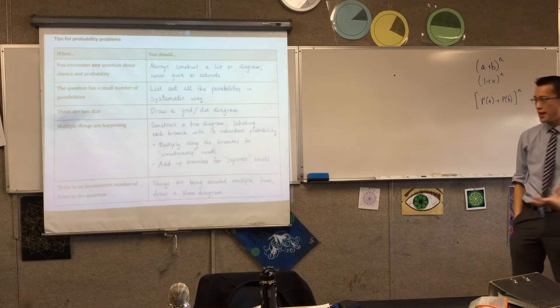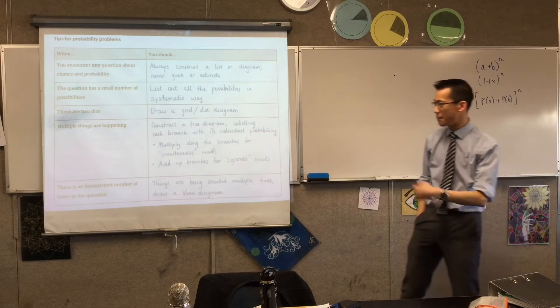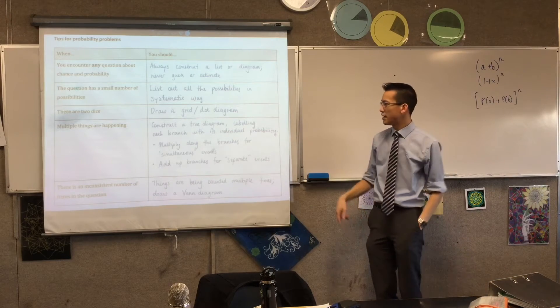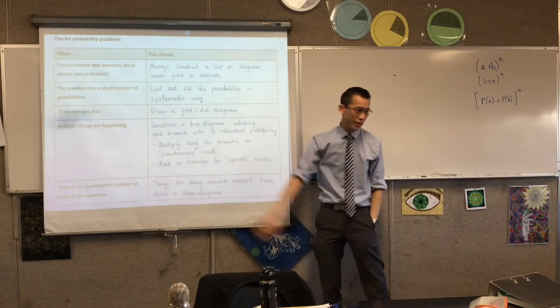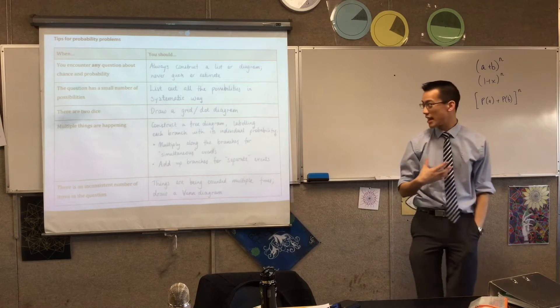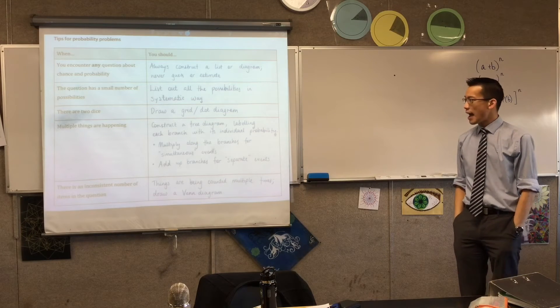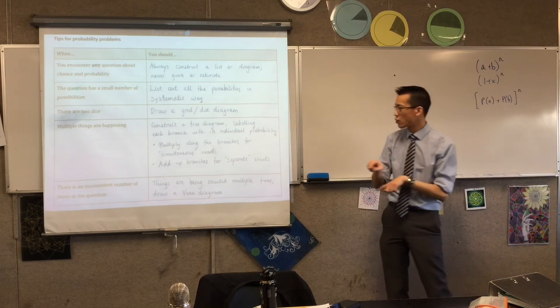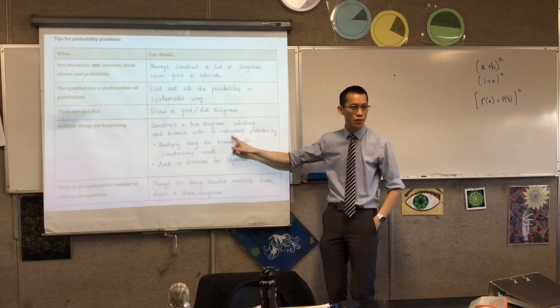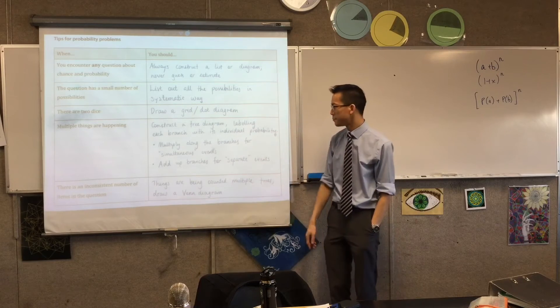If you've got a multi-stage event, like two or three things are happening in sequence, then do yourself a favor, construct a tree diagram, make it nice and big. Just like your graphs, a third of a page is a good guideline, if not more. And make sure you label each branch with the probability of each of those individual events.